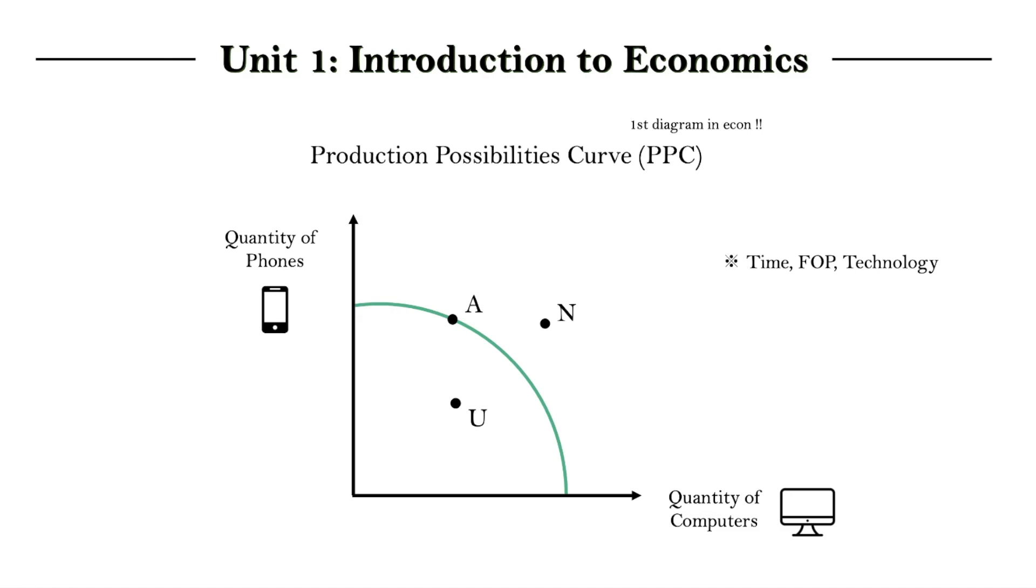Now let's look at point N, a level of output that we cannot attain at the current state. In order to get there, we need a change in the PPC itself. And this is achieved through the changes in the fixed conditions of a single PPC.